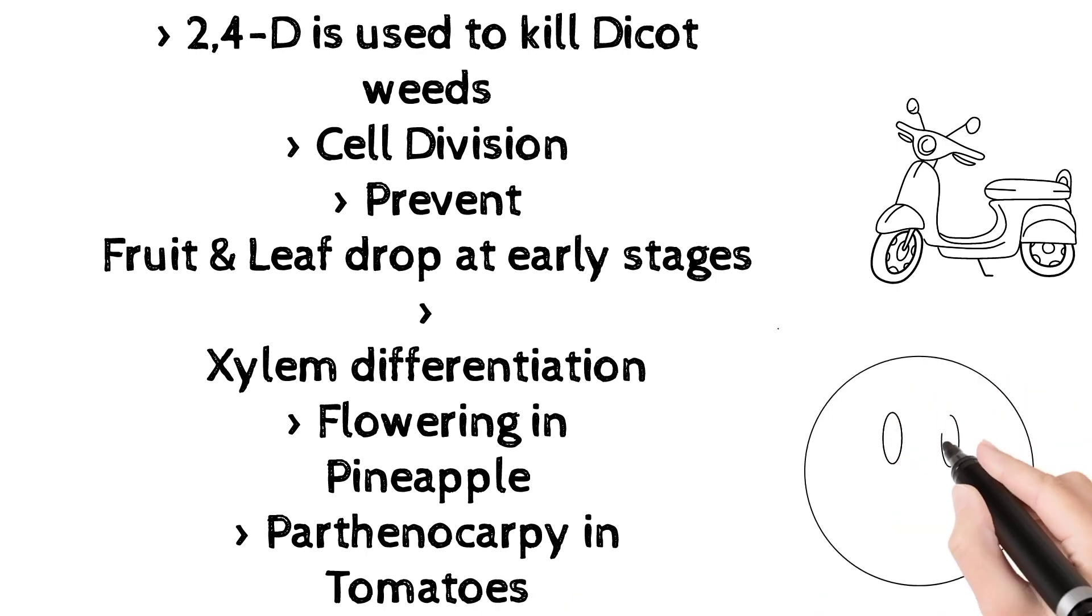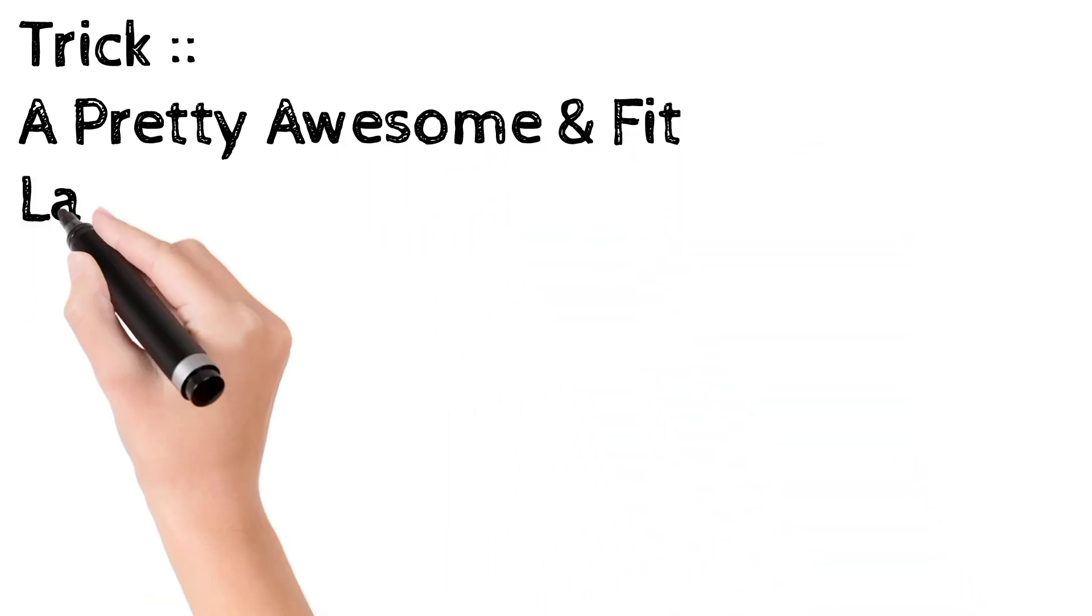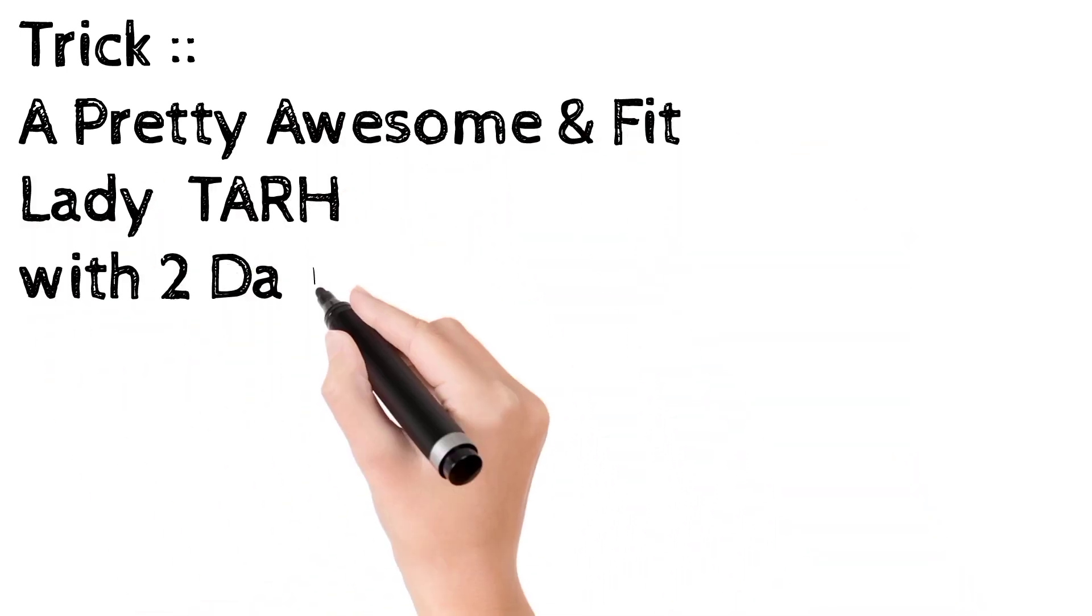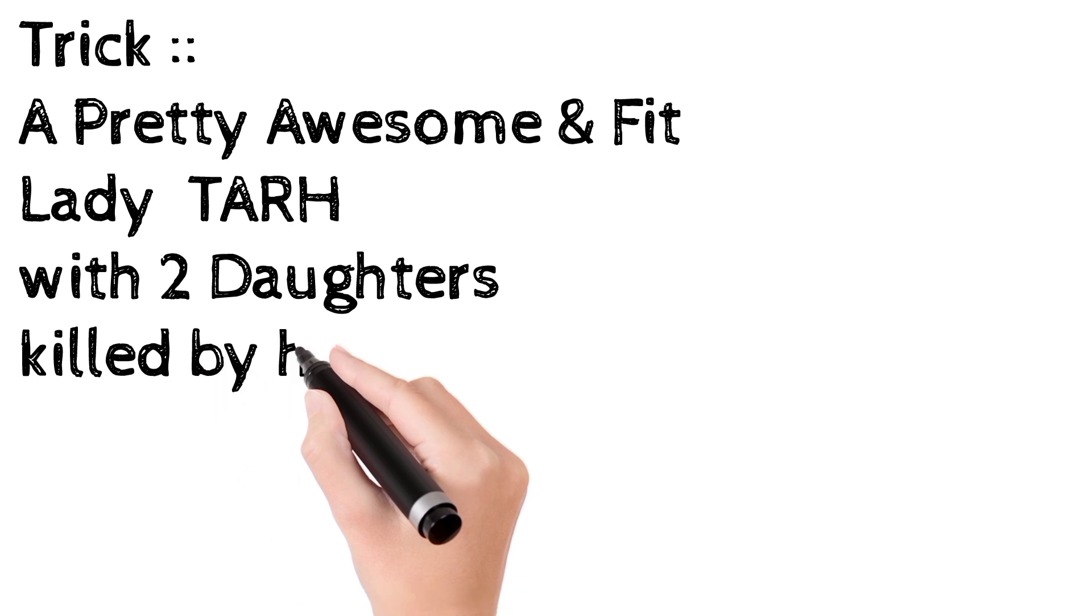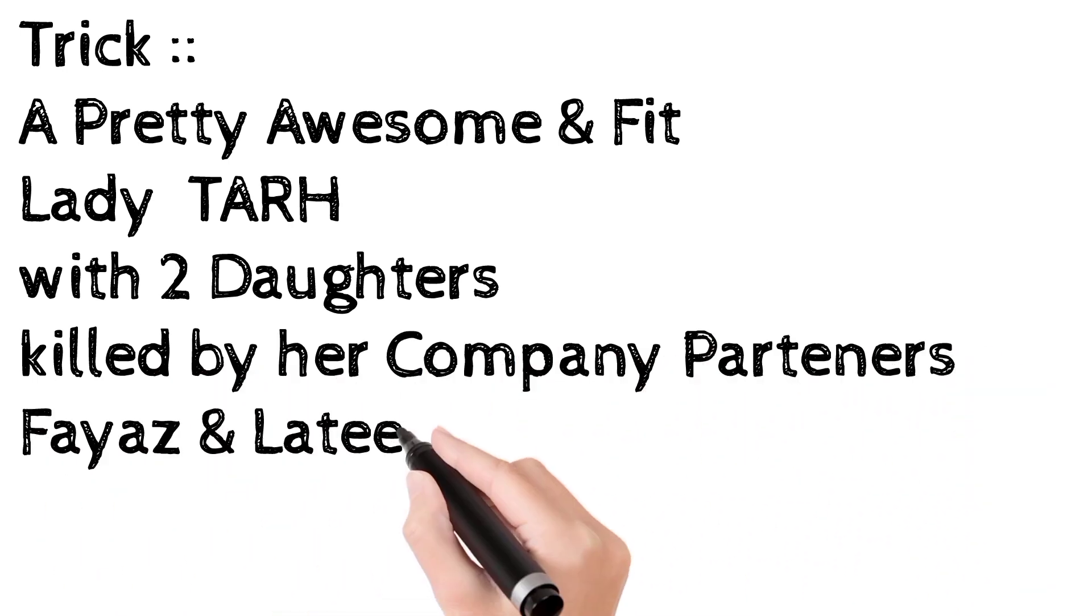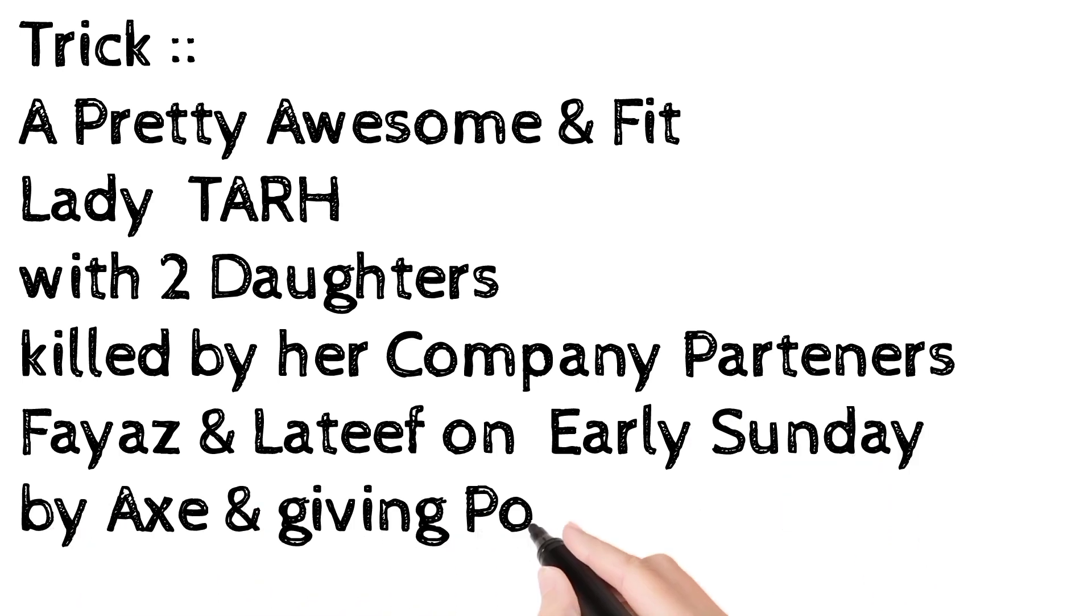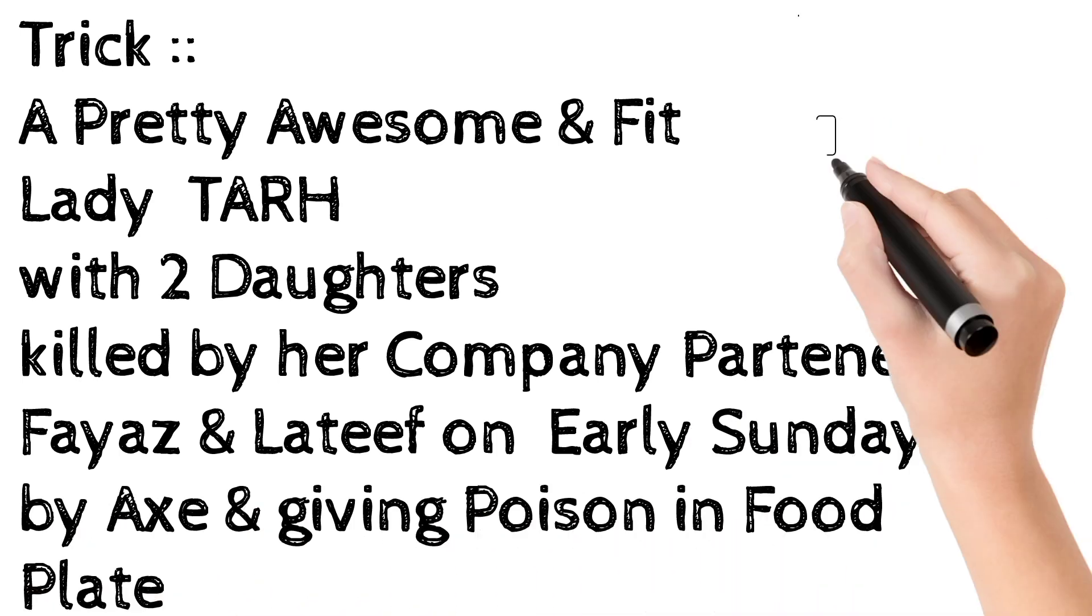Now the trick is: A Pretty Awesome and Fit Lady Tara with Two Daughters Killed by Her Company Partners Fayaz and Latif on Early Sunday by X and Giving Poison in Food Plate.